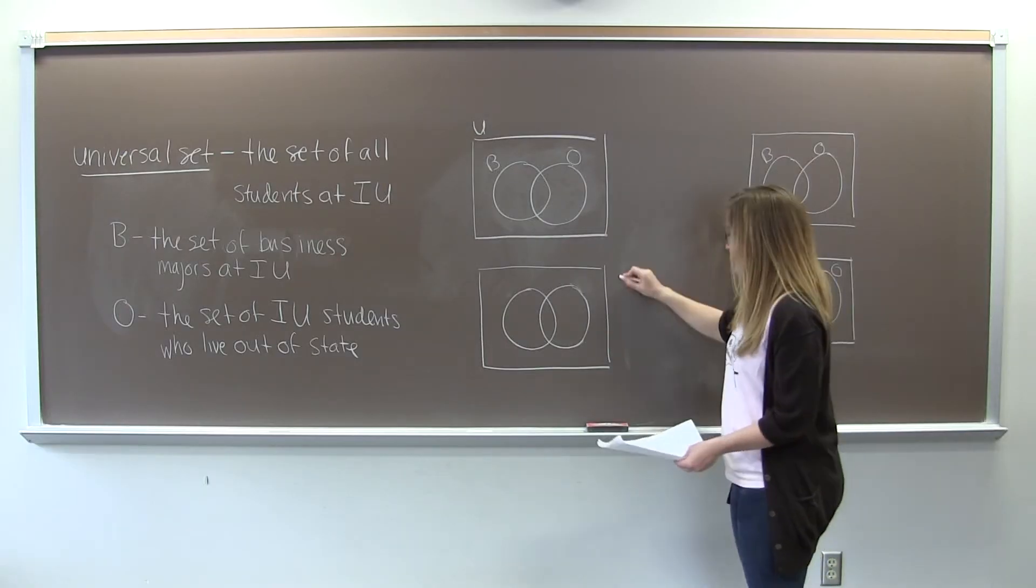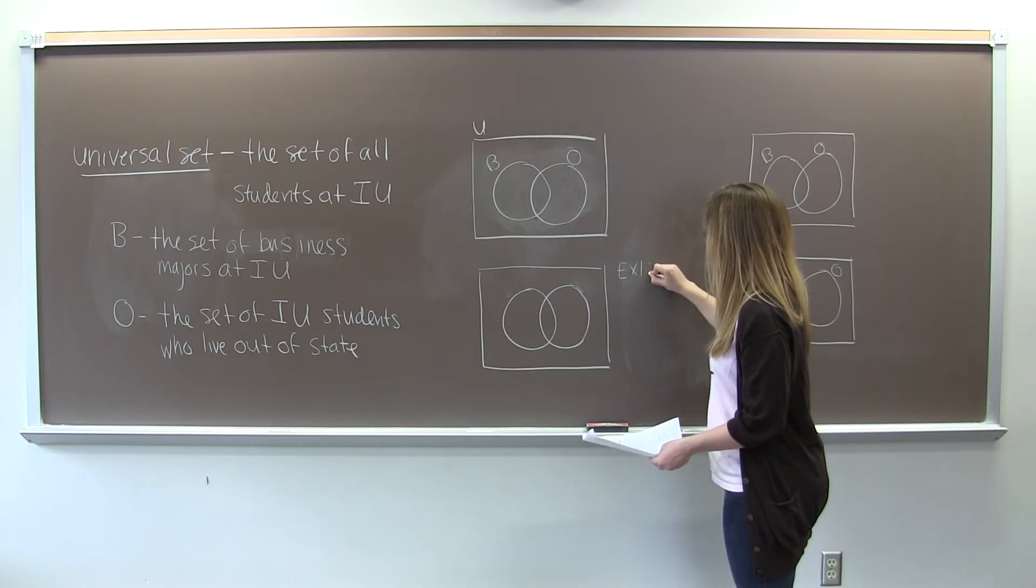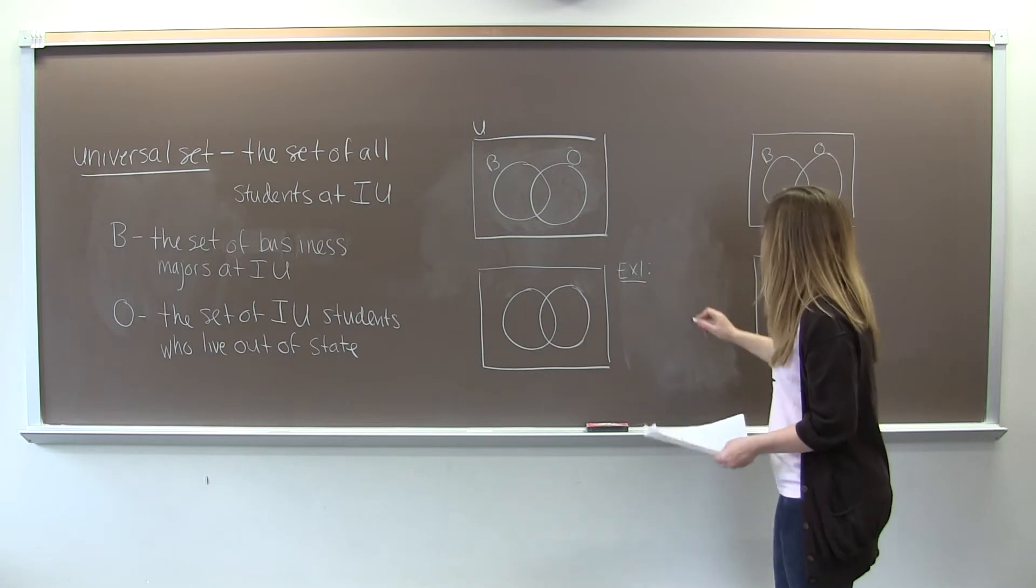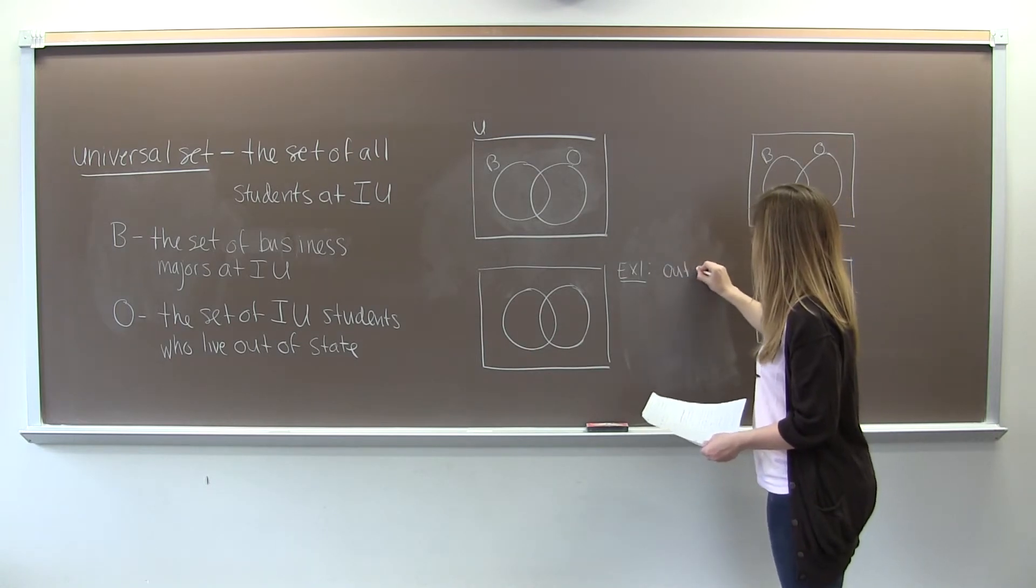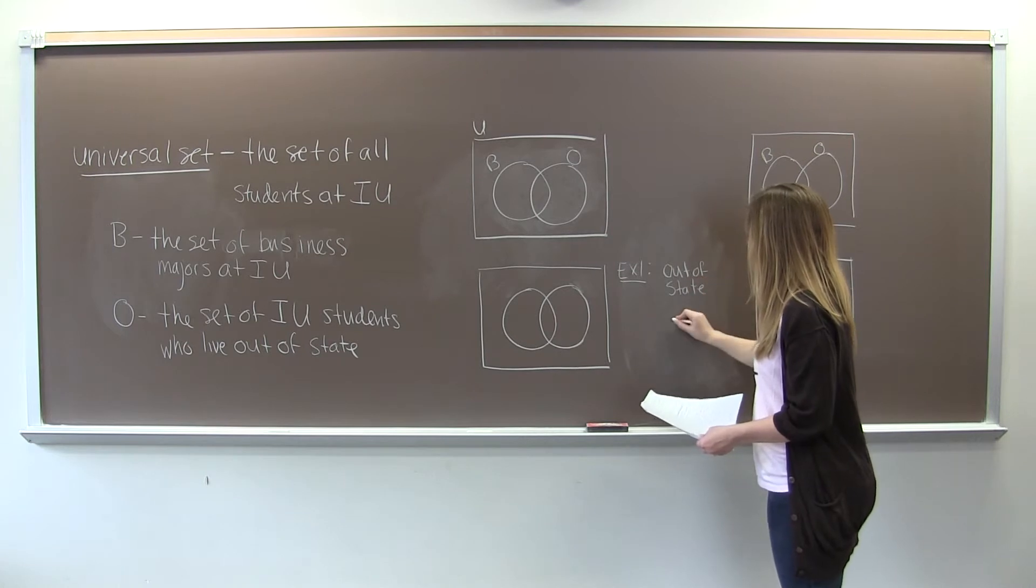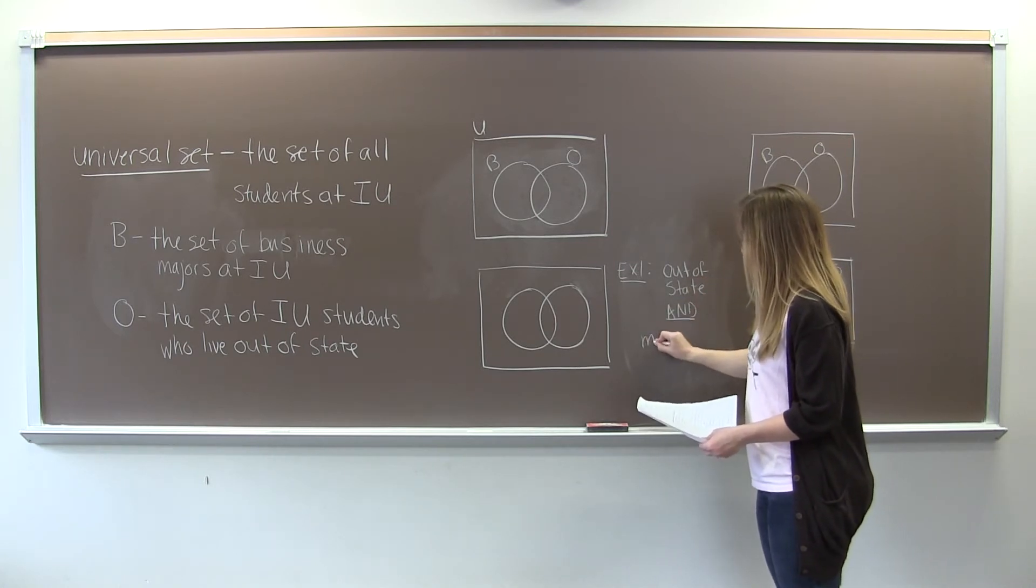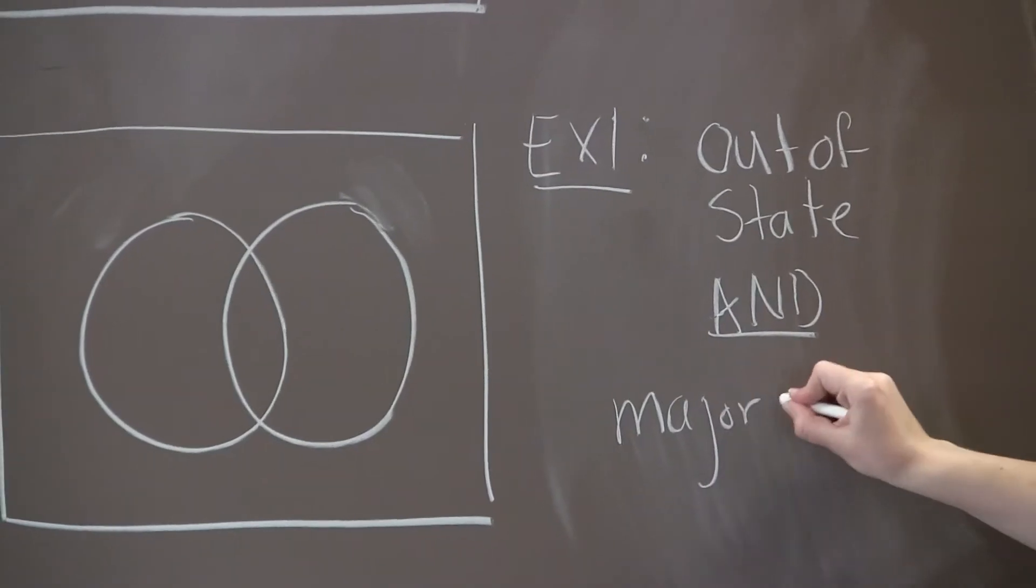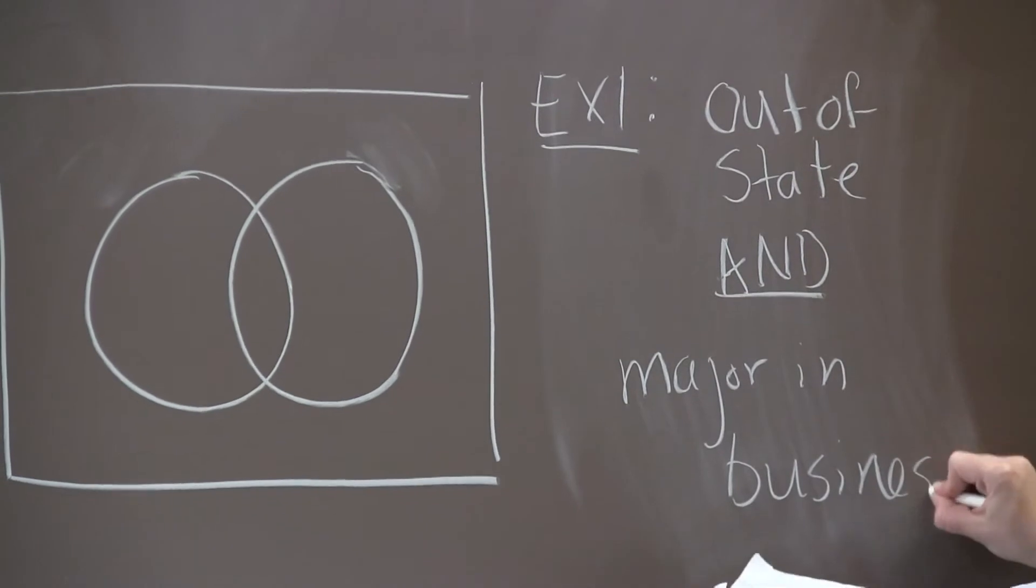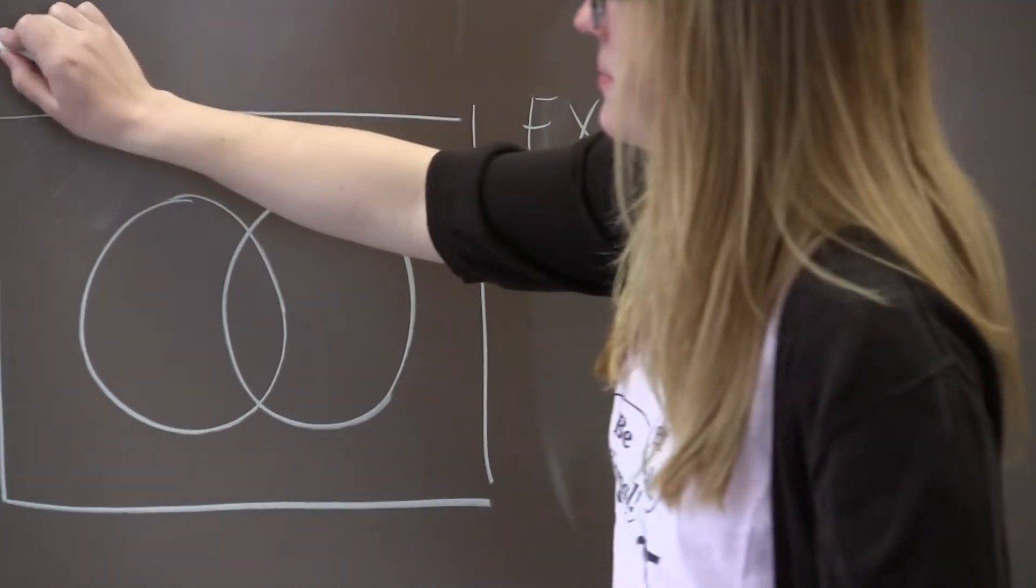So let's get to an example. Example one. Let's try to represent the set of students who live out of state and major in business. Well, the first thing we do is we draw our set U as our rectangle. We draw our two circles B and O.